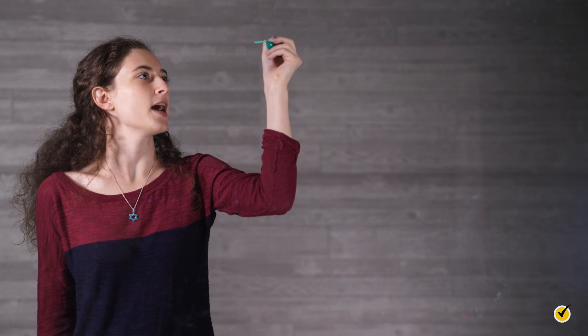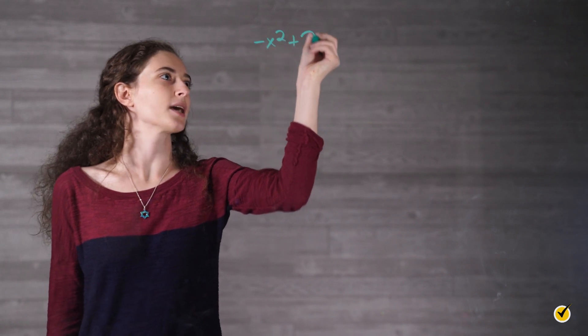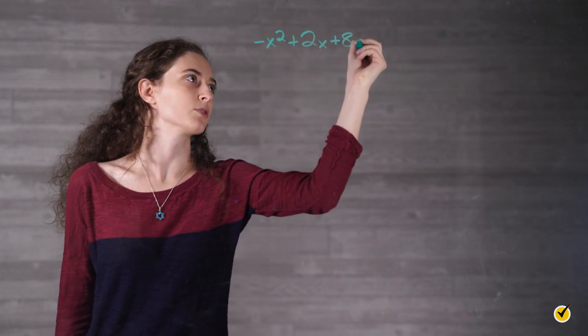Factoring is nice, but not every equation can be factored easily. Luckily, there are a couple more methods we can use, including the completing the square method. The idea behind this method is to create a quadratic equation that contains a perfect square and then take the square root to find the solutions. Here's our equation again: negative x squared plus 2x plus 8 equals 0.